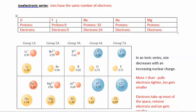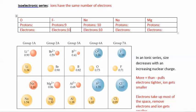Neutral fluorine is not isoelectronic with neon, but if fluorine gains an electron, it becomes fluorine minus, and now it has 10 electrons. So now they are isoelectronic.